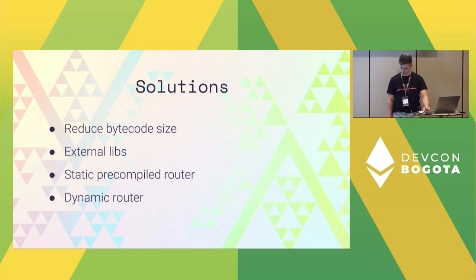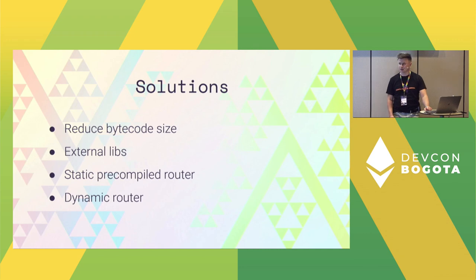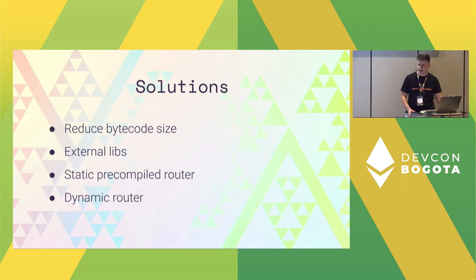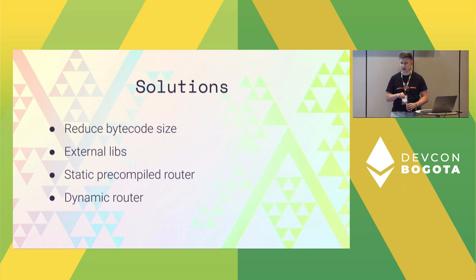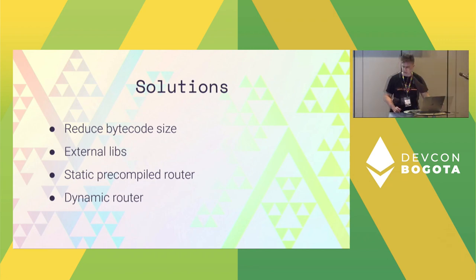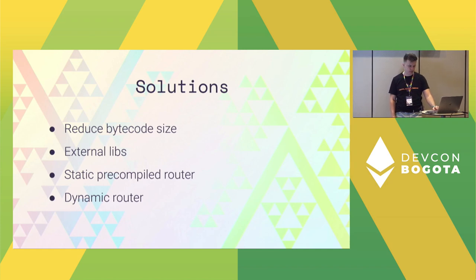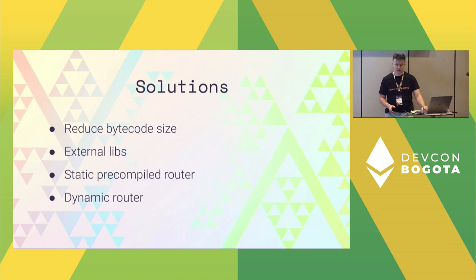There are a few solutions for this. You can reduce bytecode size using various techniques — essentially like gas golfing, I call it bytecode golfing. I do not recommend it because it's a diminishing returns sport. With each optimization, you have less and less space left, and it may even compromise the security of your project. I suggest designing your architecture from day zero to support unlimited size contracts. Other solutions are external libraries, static pre-compiled router, and a dynamic router. We'll cover them in this workshop.